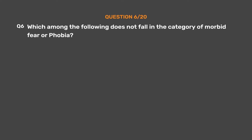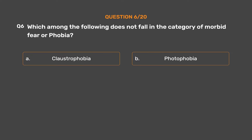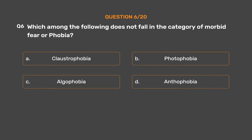Question No. 6. Which among the following does not fall in the category of morbid fear or phobia? Option A: Claustrophobia. Option B: Photophobia. Option D: Anthrophobia. The correct answer is Option B: Photophobia.